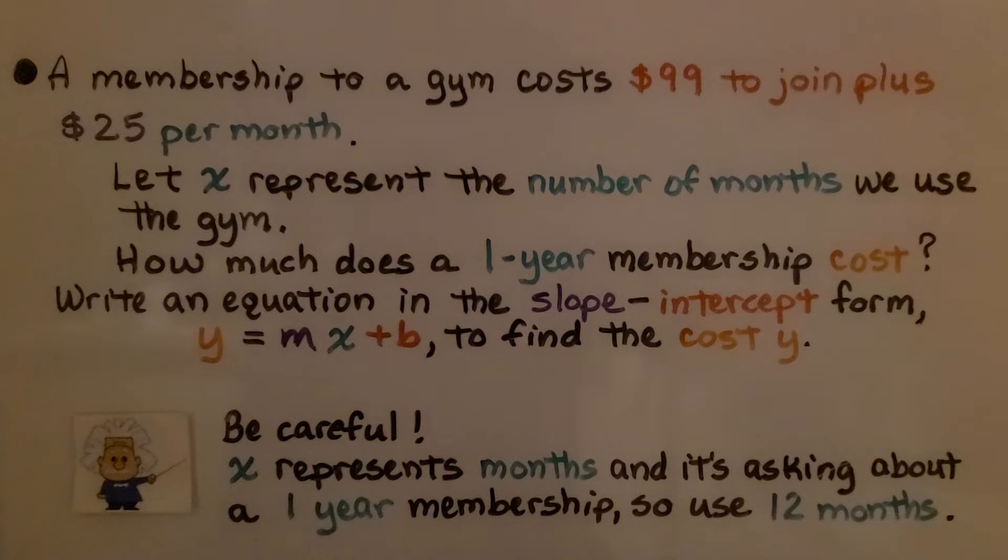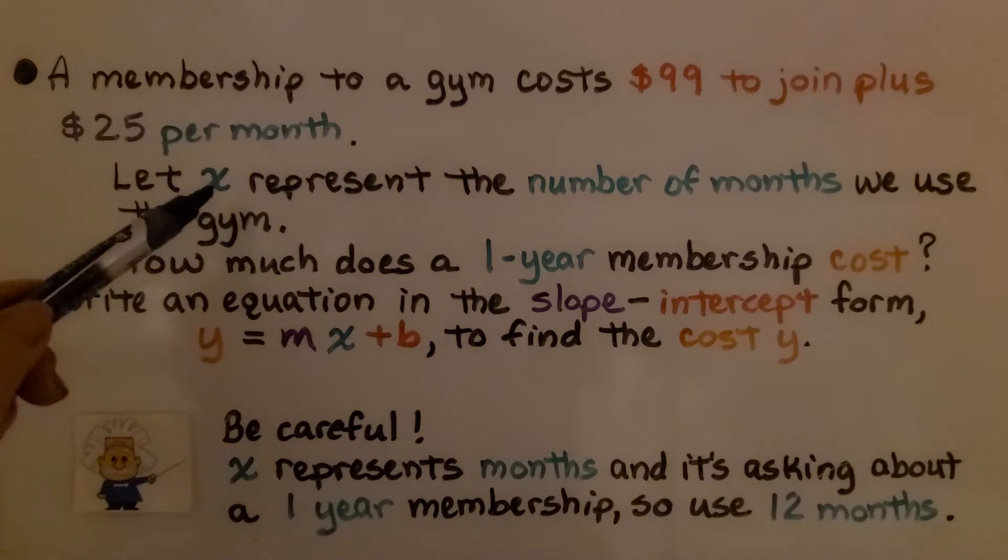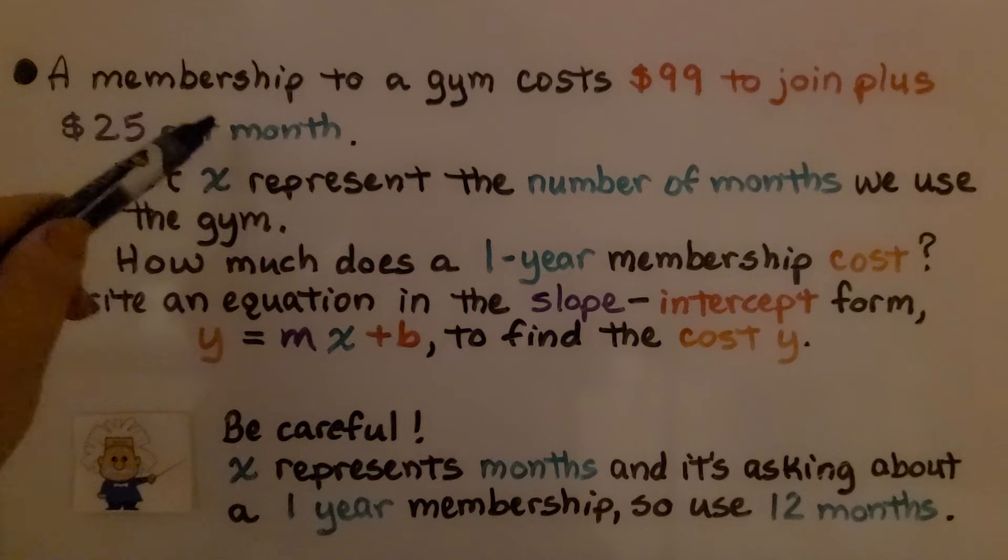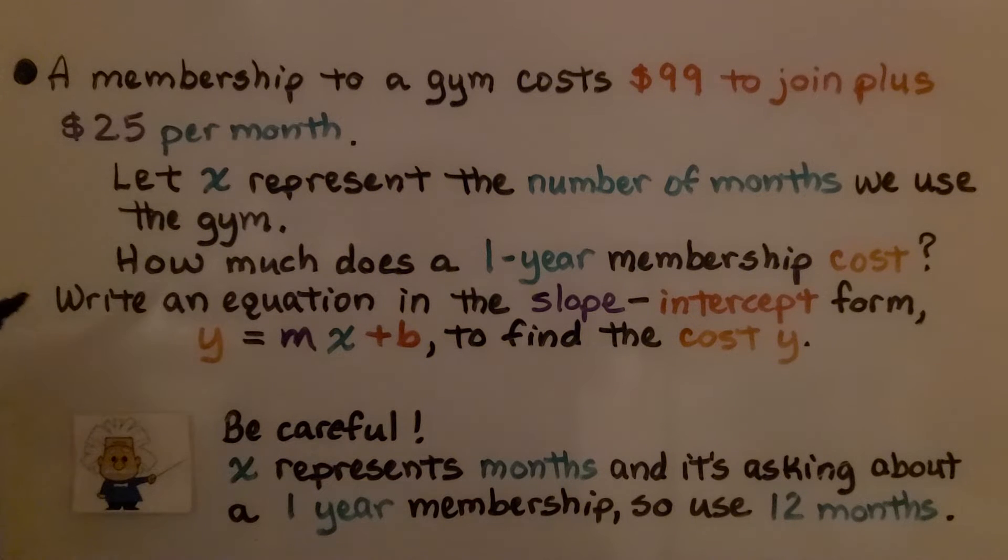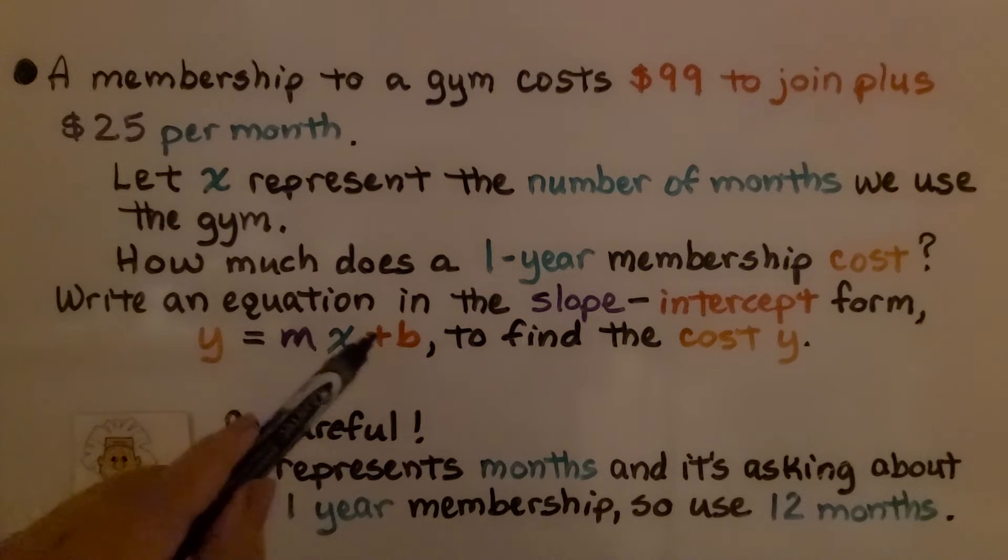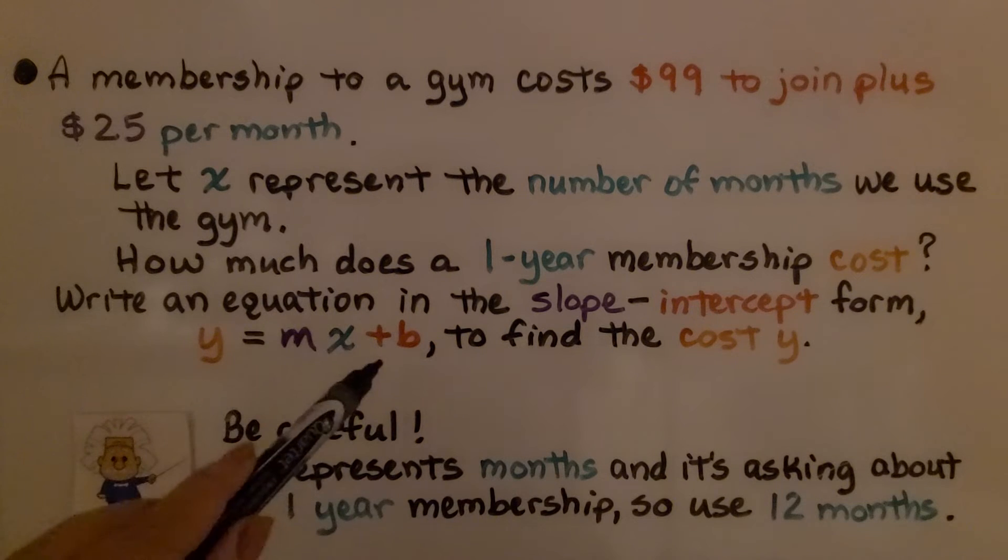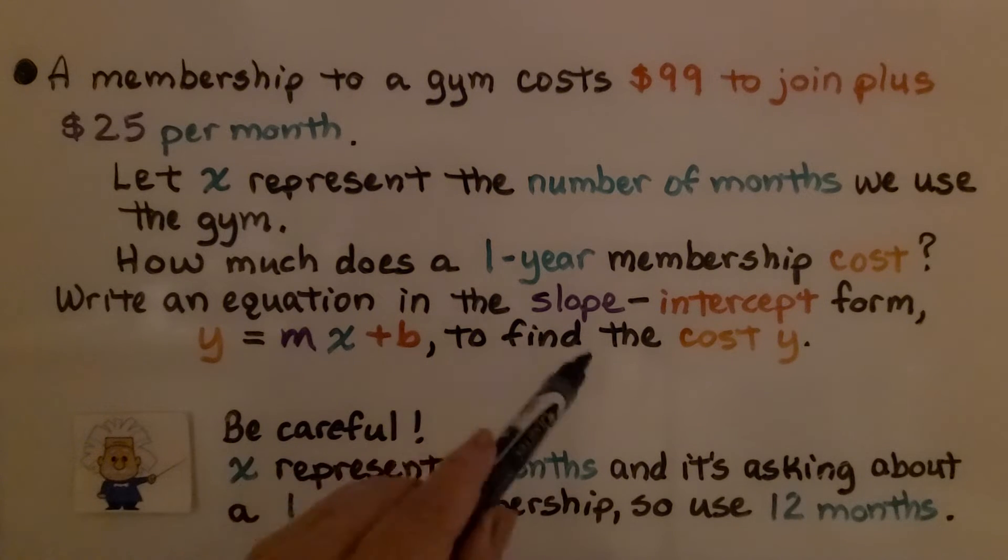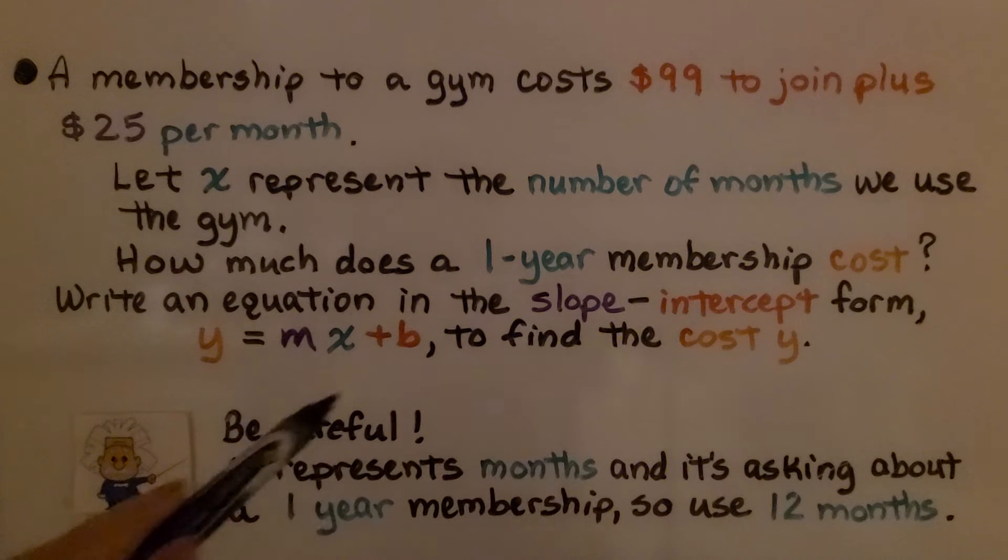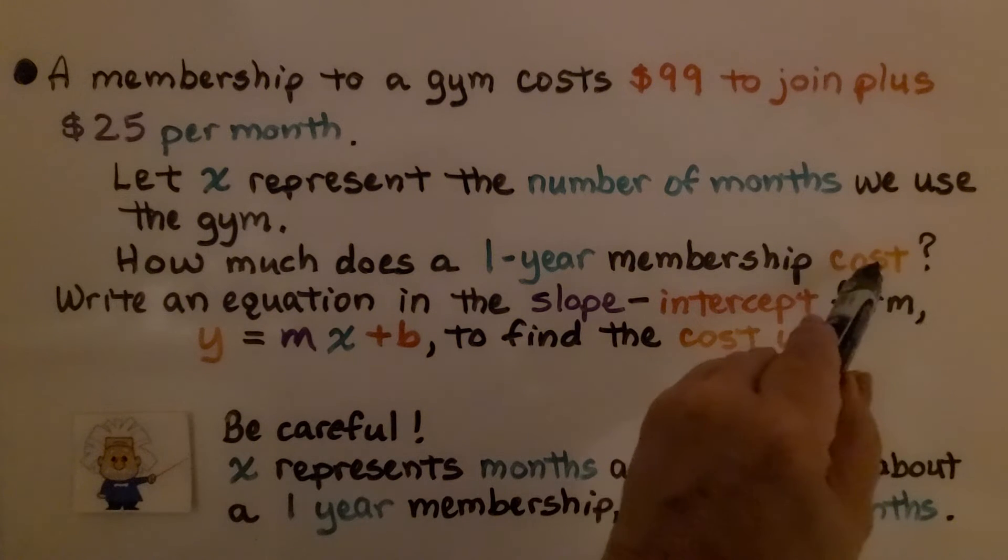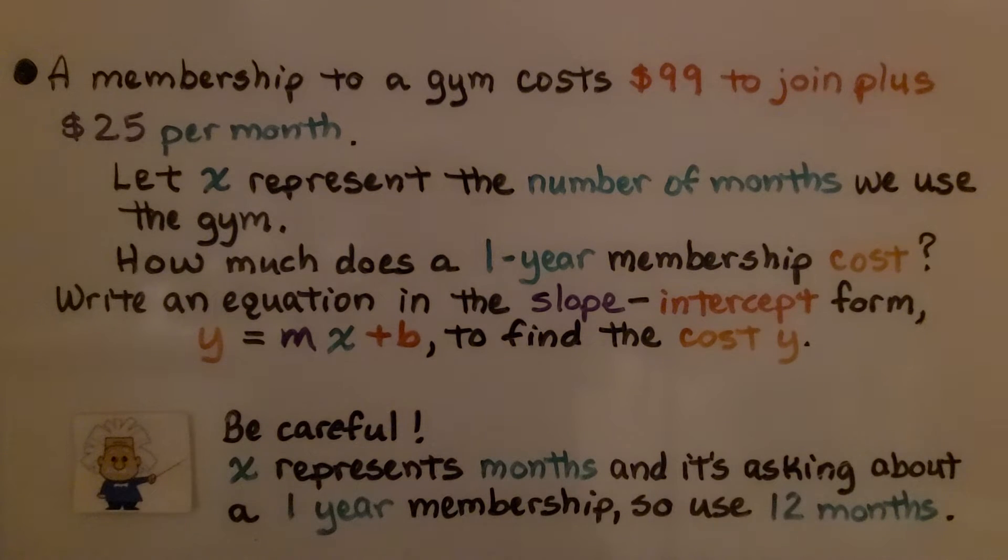A membership to a gym costs $99 to join plus $25 per month. We're going to let x represent the number of months we use the gym. How much does a one-year membership cost? Write an equation in slope-intercept form. We have y = mx + b. That's our slope-intercept form, and we use this equation to find the cost y. That's going to be the total cost of the membership.